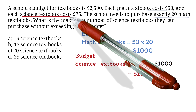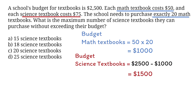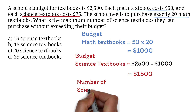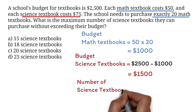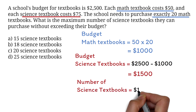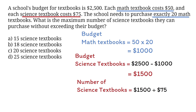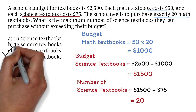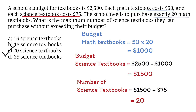Each science textbook costs $75. So to find how many science books you can purchase with $1,500, you need to divide 1,500 by 75. We do the division to get 20. The correct answer is C — the school can buy 20 science textbooks.